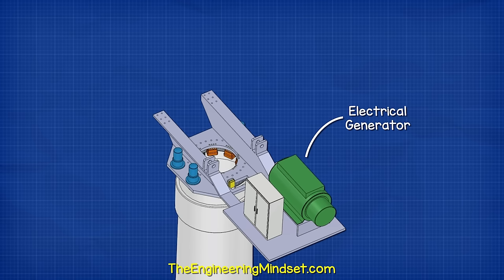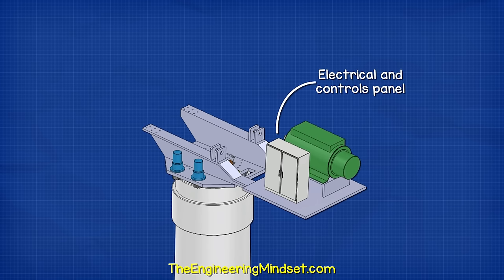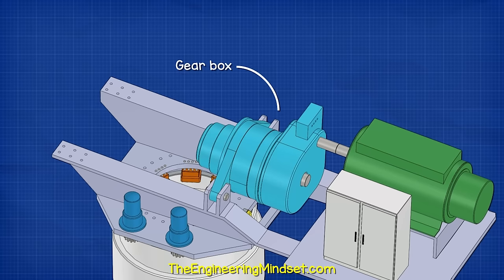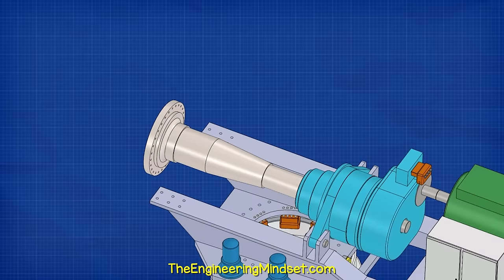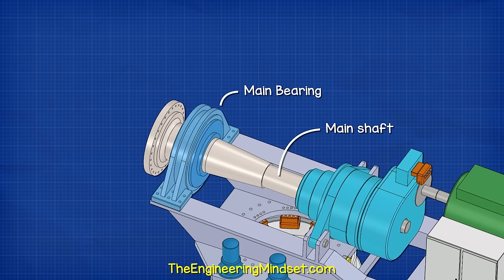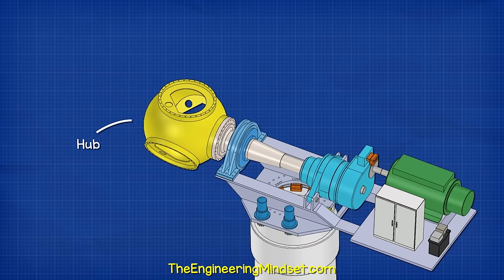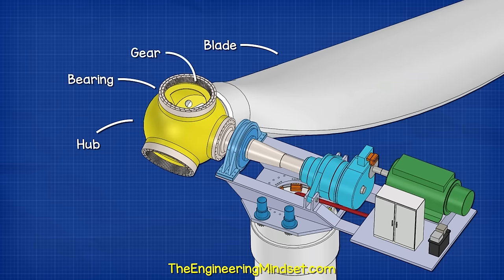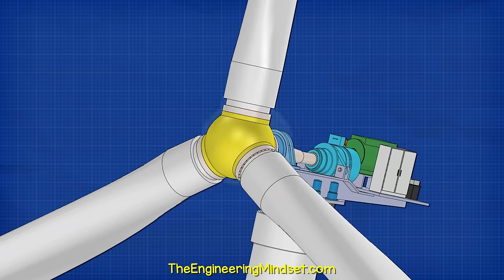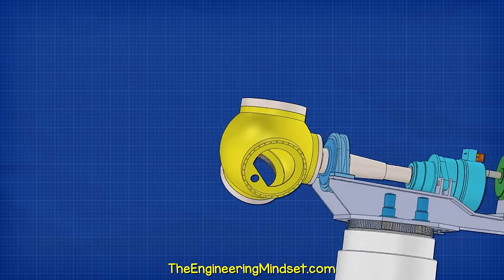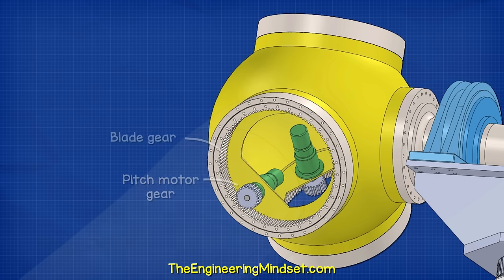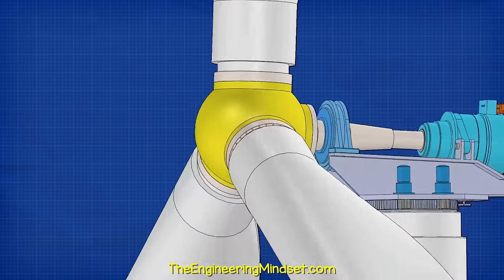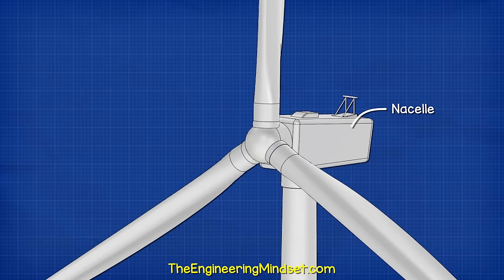We also find a set of hydraulic brakes and a large disc brake which will hold the turbine in position. At the back of the bed plate we find the electrical generator, along with an electrical and controls panel. The generator connects to a gearbox via the high-speed shaft, which has a hydraulically controlled disc brake powered from the hydraulic control set. The gearbox then connects to the main low-speed shaft, supported by the main bearing, which connects to the hub at the very front. The blades bolt onto the hub via geared bearings, and the metal hub is covered with a nose cone to protect it and improve aerodynamics. Inside the hub we typically find three motors attached to the hub whose gears interlock with the geared bearings, allowing the blades to be tilted.